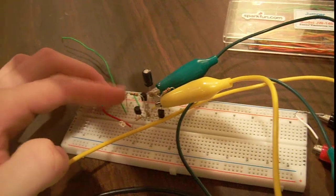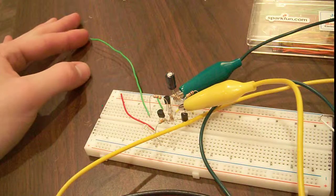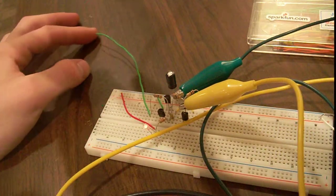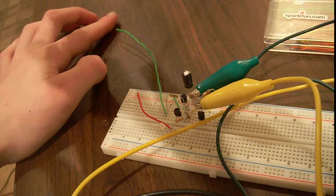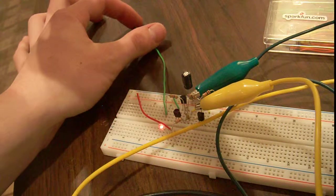There we go. I'm just touching the end of this resistor, or the end of this wire, which is connected to the end of the resistor, as you can see when I touch the wire. The LED goes on, so touch the wire.